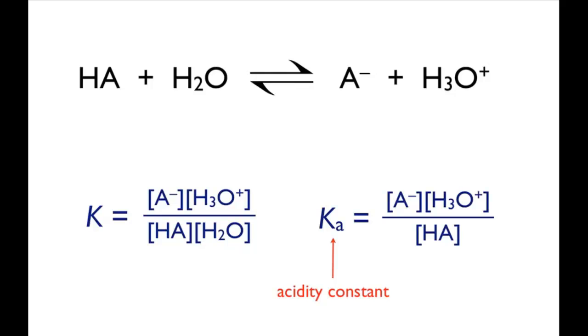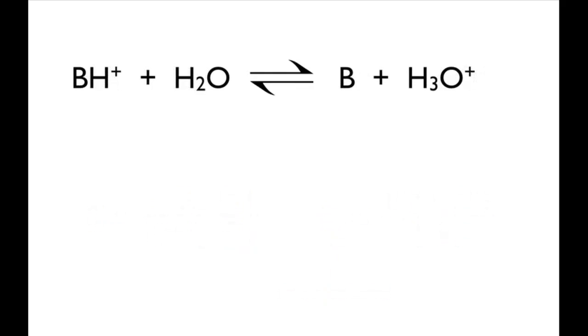For a base, you can write out a similar equation based on the equilibrium between B and its conjugate acid BH+. For this process, you can also write an equilibrium constant K.